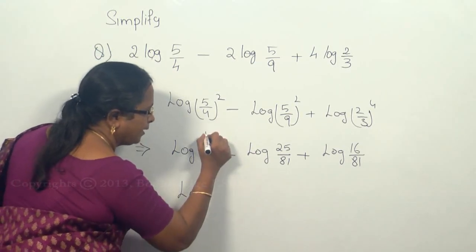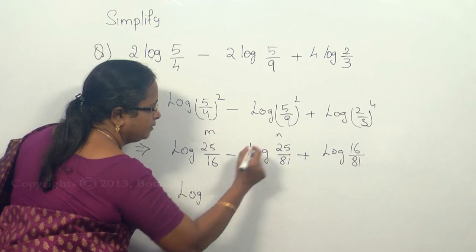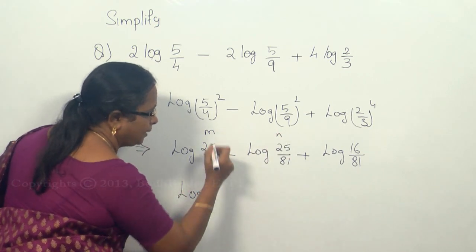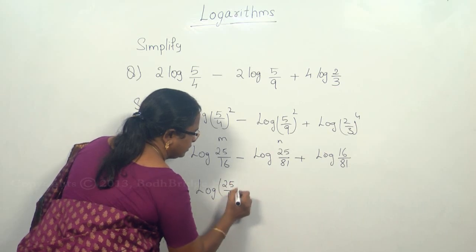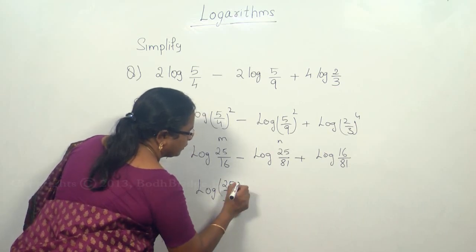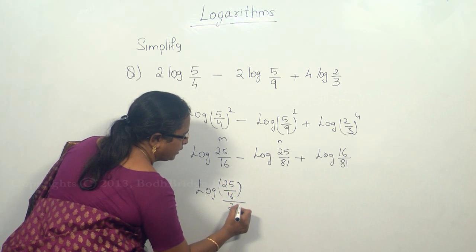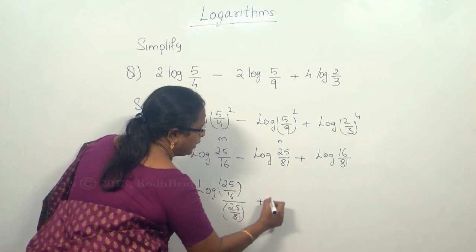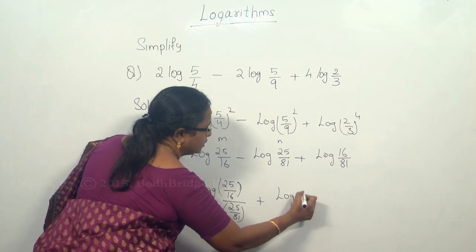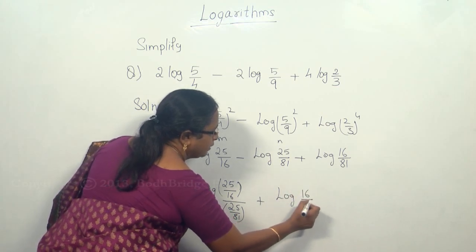So this will be considered as m and this is considered as n because it is minus, it's going to be m/n. So this is 25/16 divided by 25/81 plus log of 16/81.